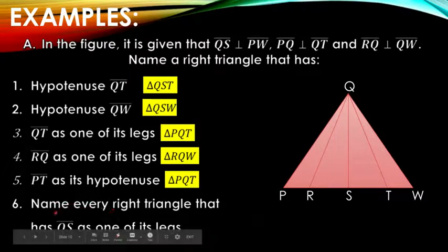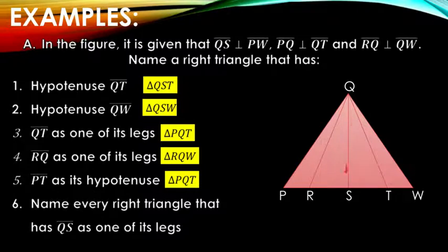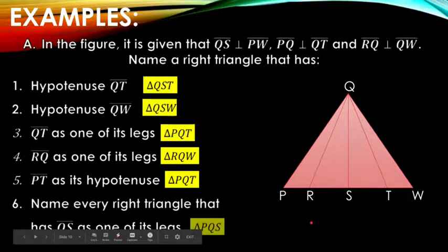Because the longest side is side PT. Name every right triangle that has QS as one of its legs. Line QS should be a leg. We have triangle QRS, triangle QST, the bigger triangle QPS, and triangle QWS.